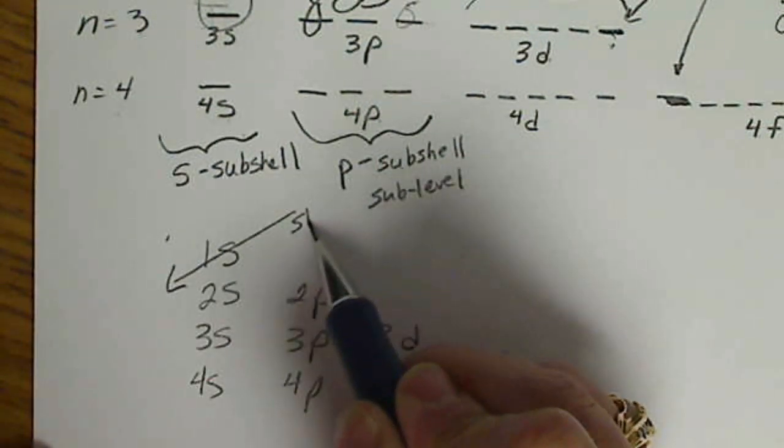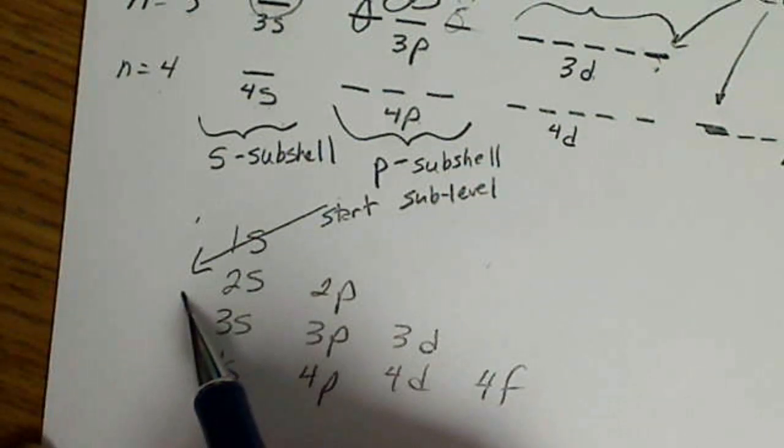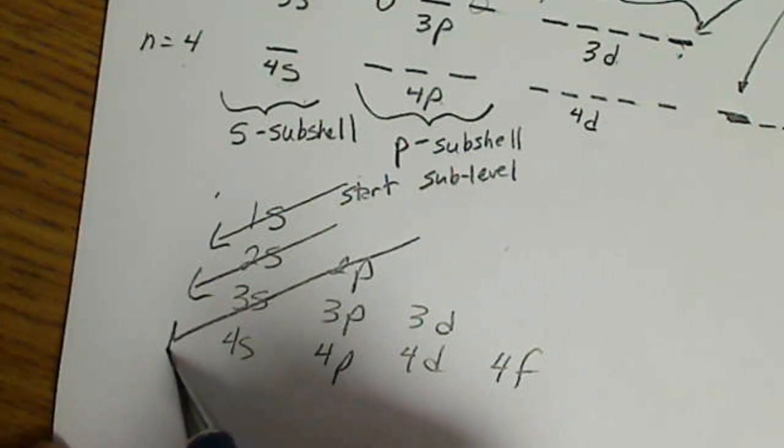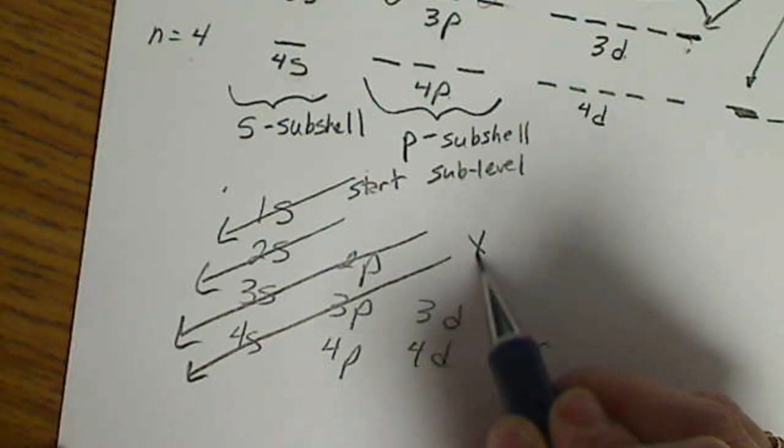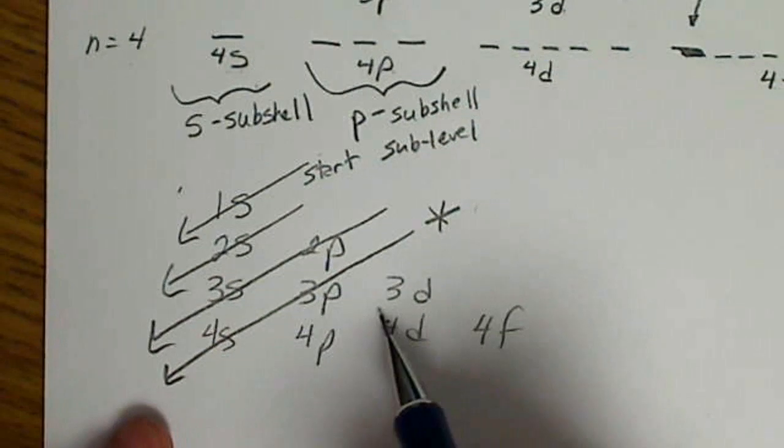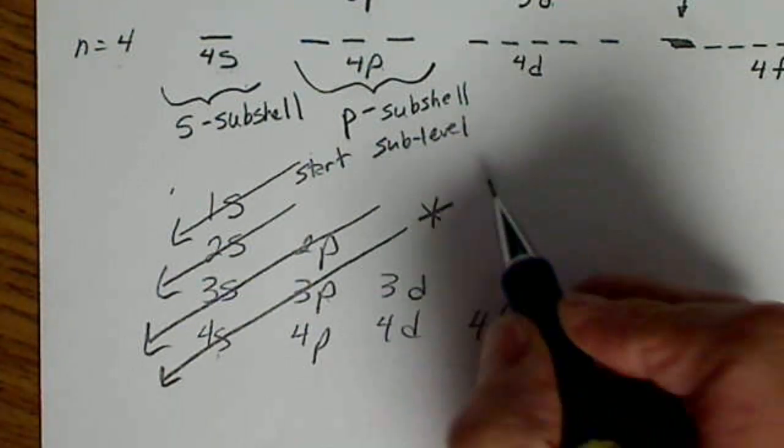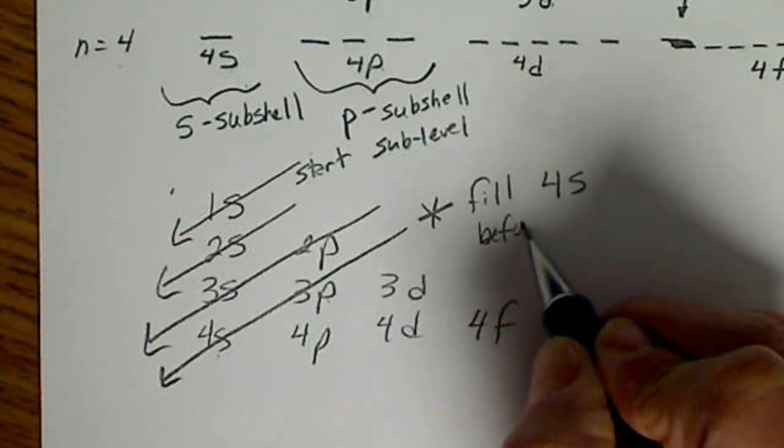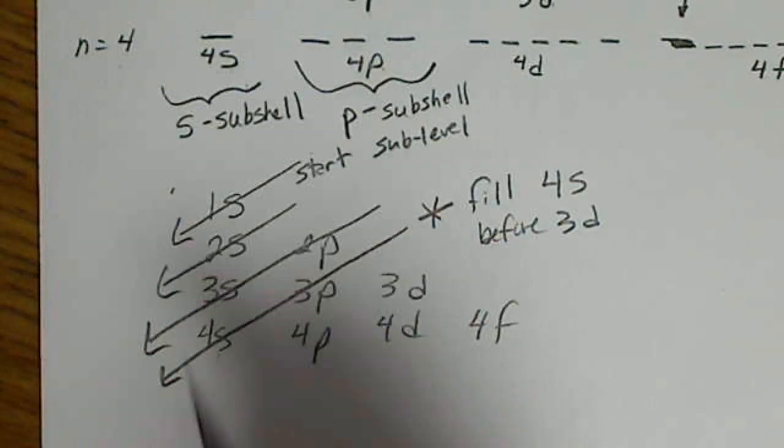So if we draw arrows in that direction, from the top right-hand corner, we fill the 1S, then we come back and fill the 2S, then the 2P and the 3S. After we fill the 3P, here's where we seem to go out of order. So after the 3P subshell is filled, we go to the 4S. So we just need to remember to fill the 4S before the 3D, because the 4S is actually lower in energy because of that spherical shape.